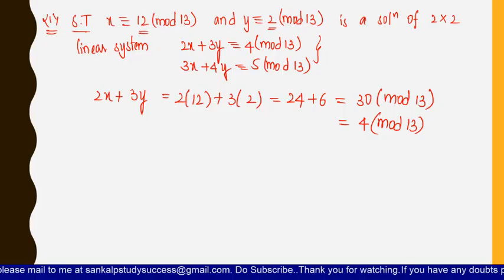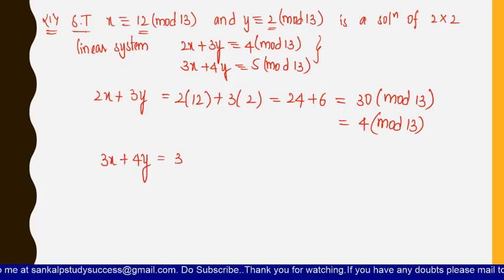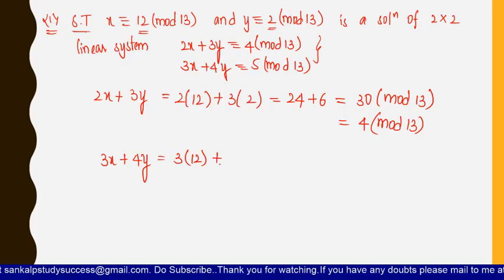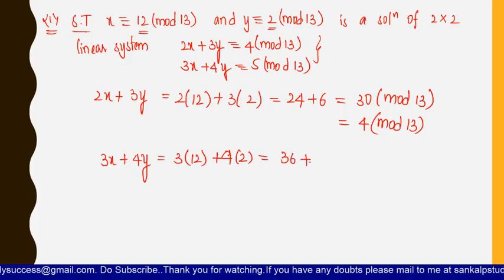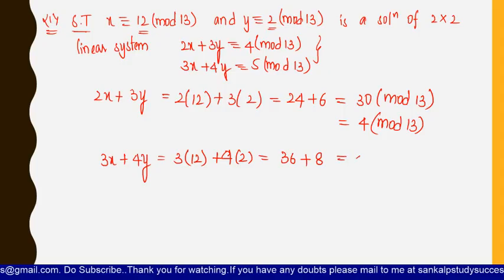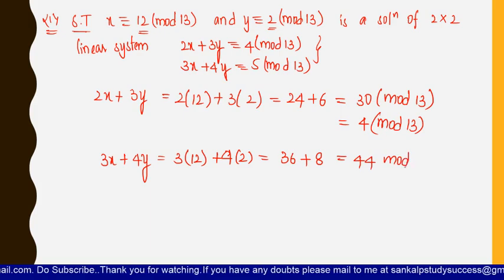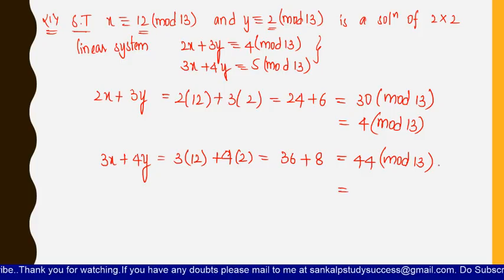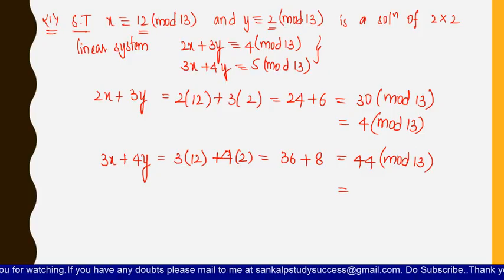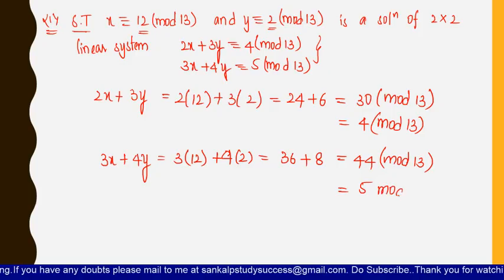Now let us find the result for 3x + 4y by substituting x = 12 and y = 2. We get 3×12 + 4×2 = 36 + 8 = 44, which is 44 mod 13. To simplify: 13×3 = 39, so 44 − 39 = 5. Therefore 44 mod 13 = 5 mod 13.